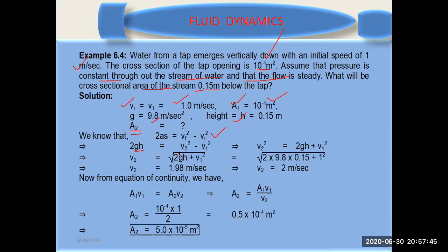2gh equals v₂² minus v₁², so v₂² = 2gh + v₁². So v₂ is this one.